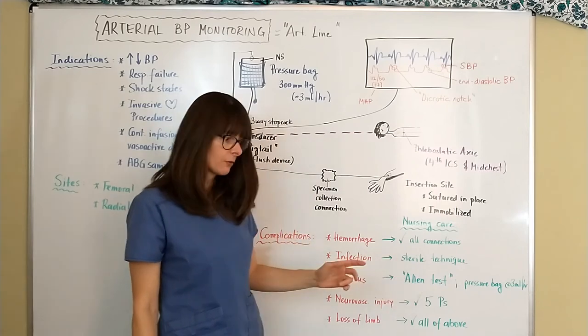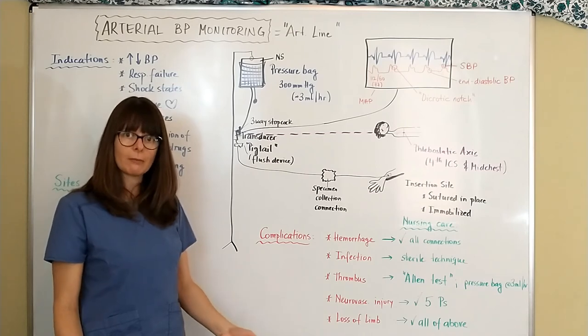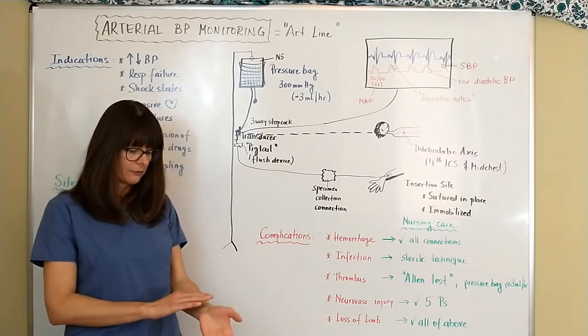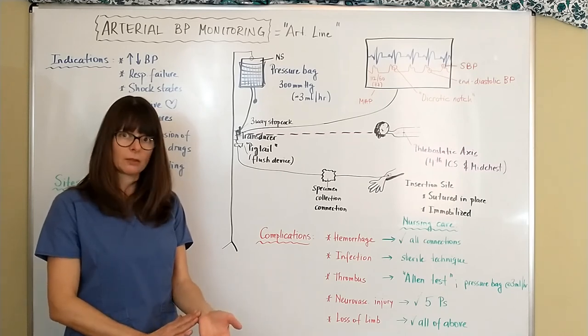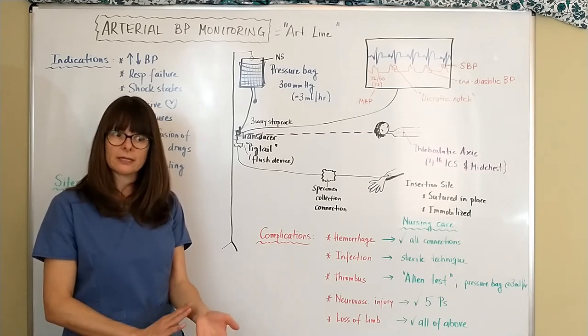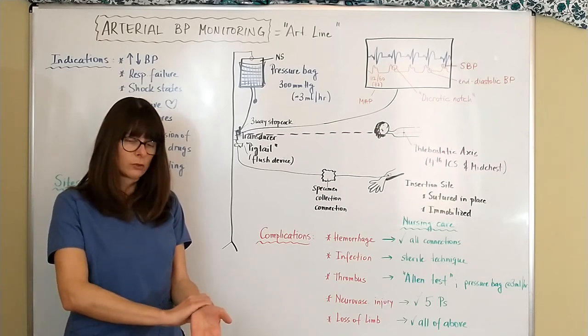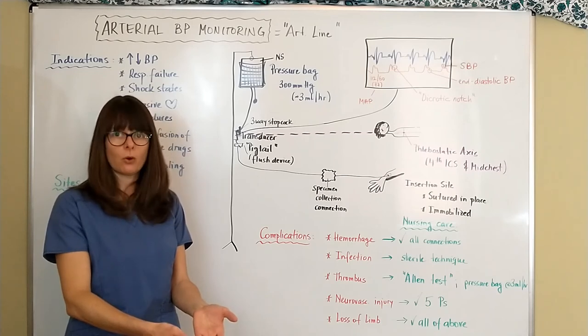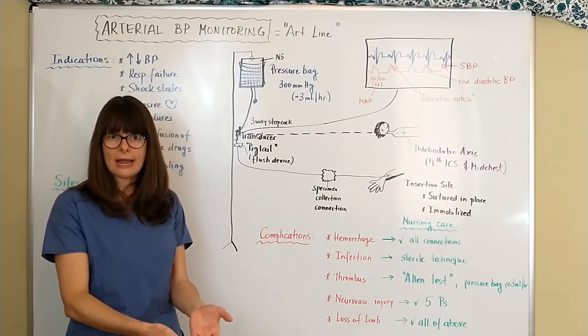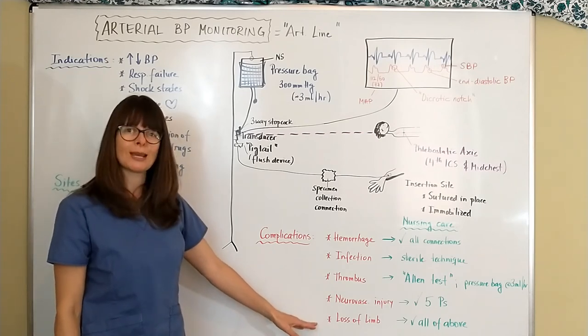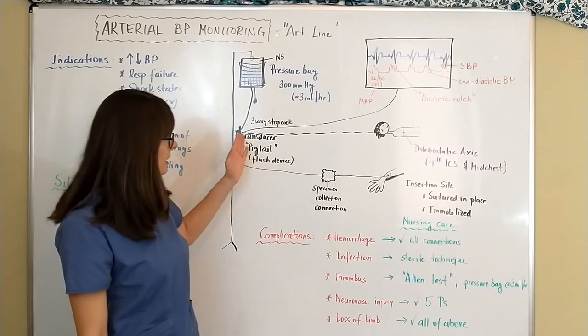So make sure that you know what those stand for. And then loss of limb can also happen. So remember we are in an arterial line, if this now is not working for whatever reason and maybe we haven't taken particular attention to the Allen test and made sure that the ulnar artery is patent, now there is no blood flow to that hand. No blood flow means no oxygen means that the cells are going to die and the patient could lose a limb.